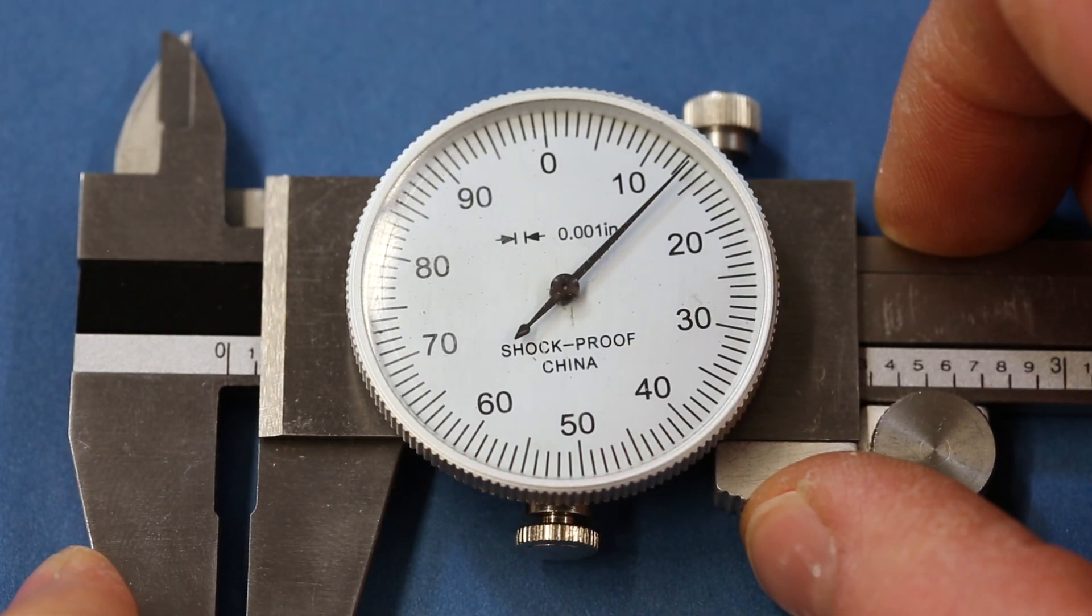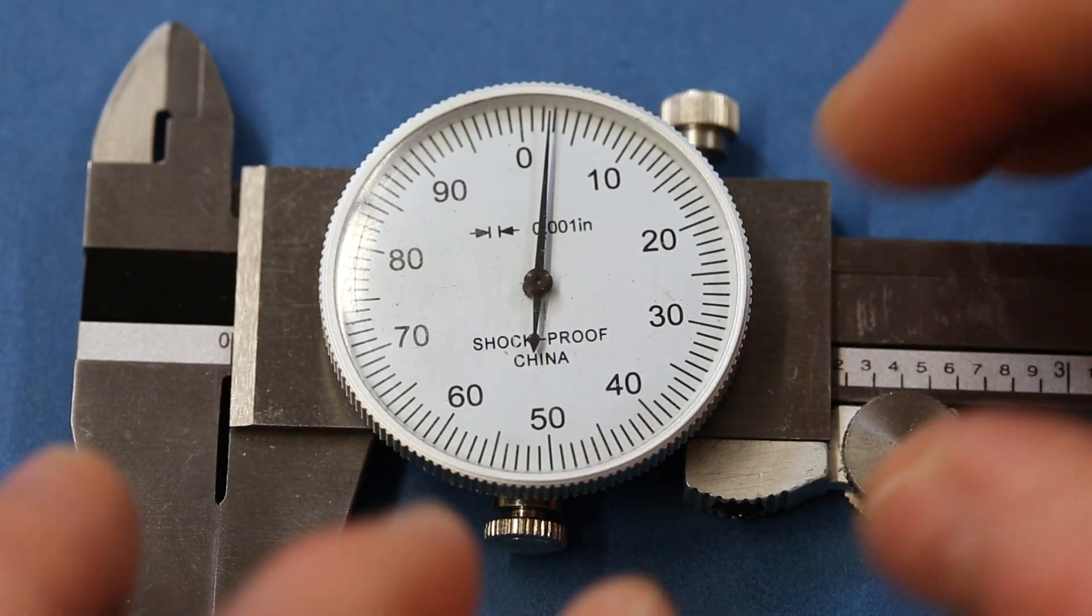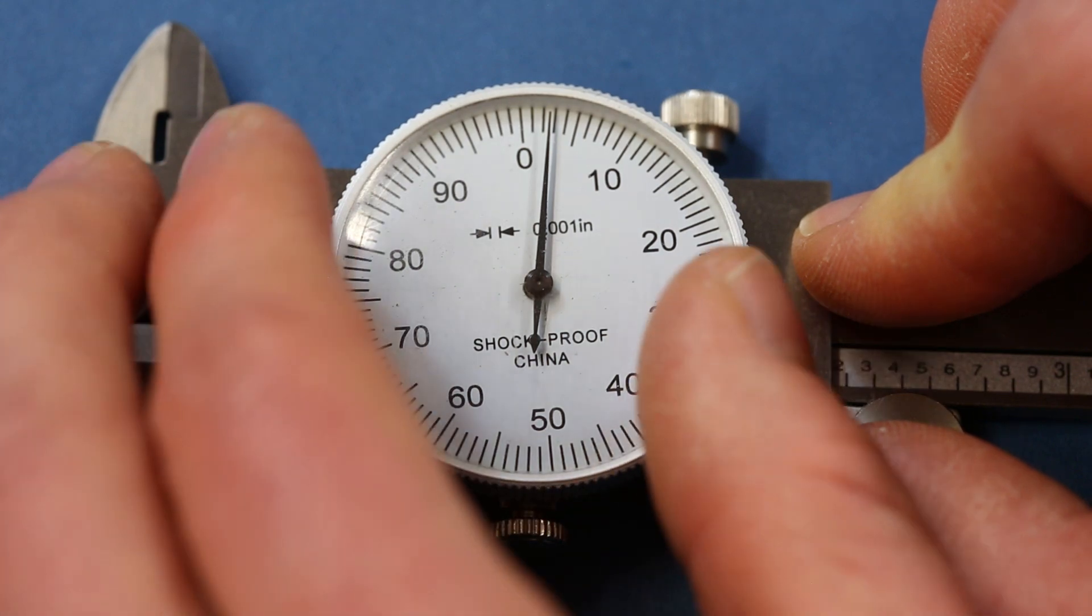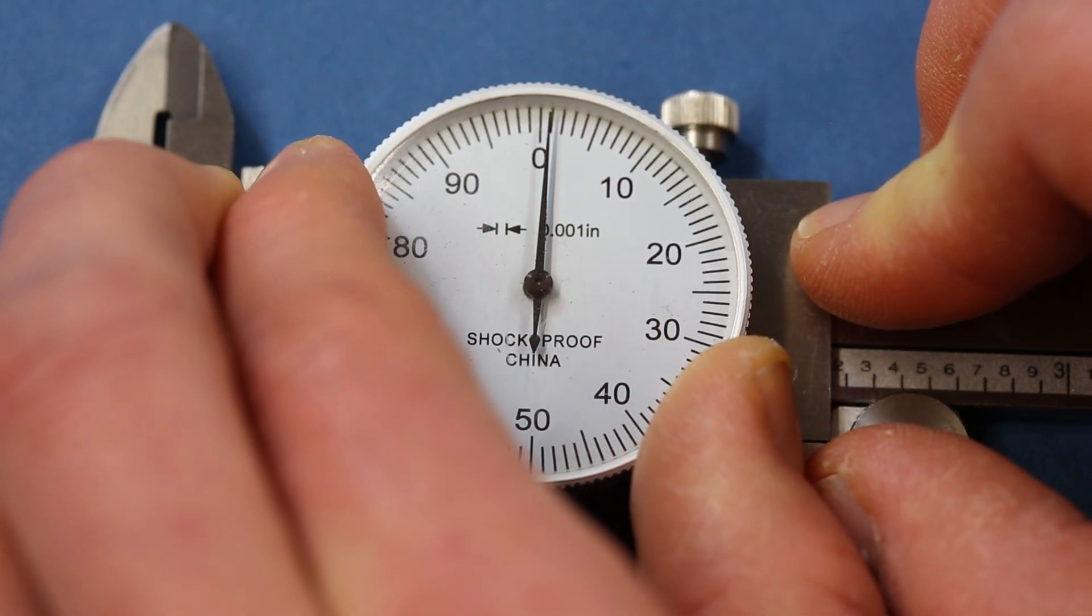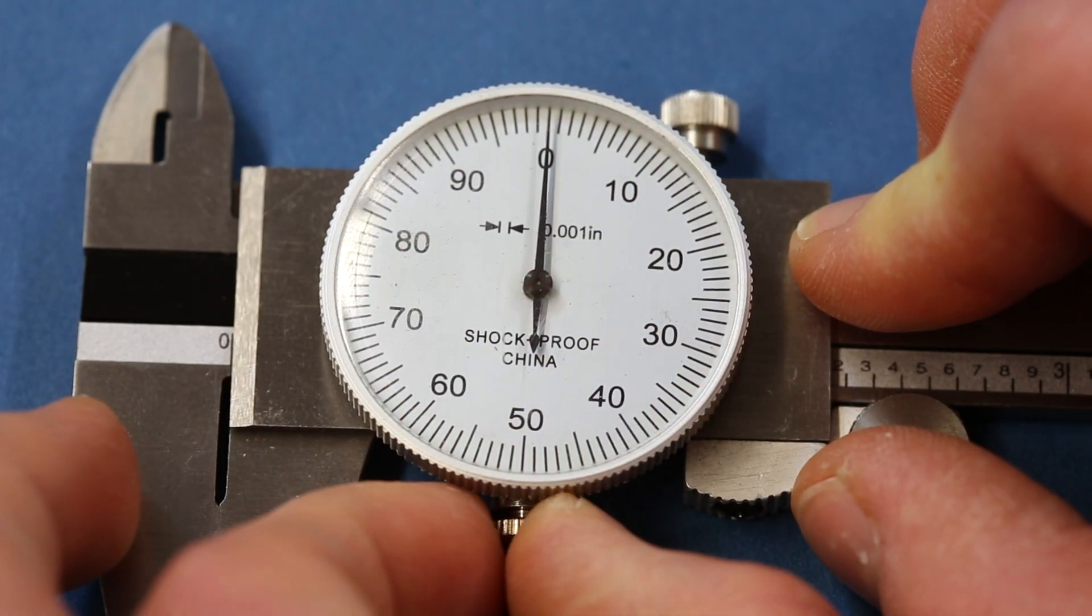To zero dial calipers, close the jaws. If you see that the needle on the dial does not line up with zero, loosen the lock screw on the dial and twist the dial face until the zero tick mark lines up perfectly with the needle. Tighten the lock screw and you're good to go.